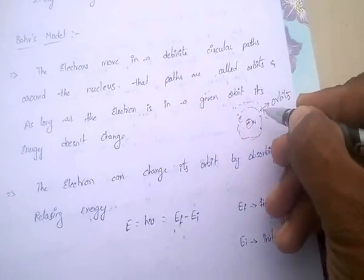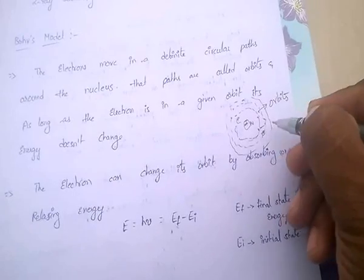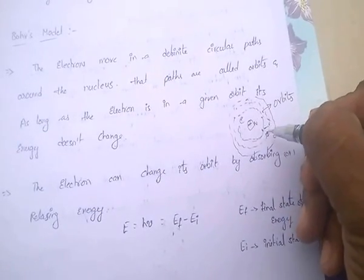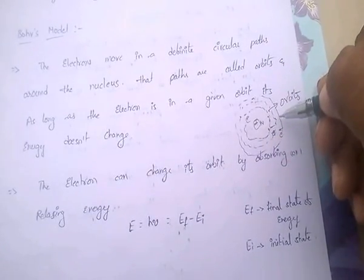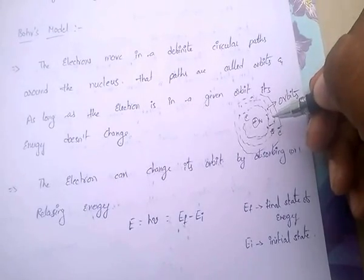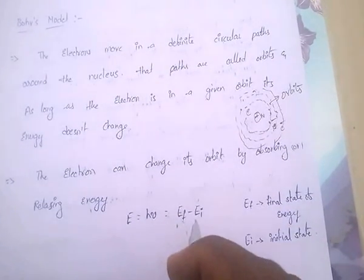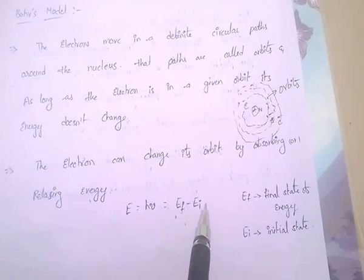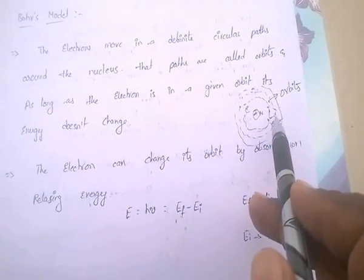If there are a number of orbits in the atom, an electron can change its state by absorbing or releasing energy. Whenever an electron goes from an initial state to a final state or from a final state to an initial state, the electron can change orbit by absorbing or releasing energy. That is, ΔE = E_F − E_I, where E_F is the final state energy and E_I is the initial state energy.